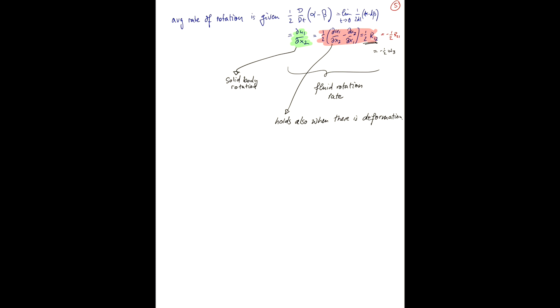So to conclude, our vorticity vector, just as our rotation tensor, represent twice the fluid rate of rotation.